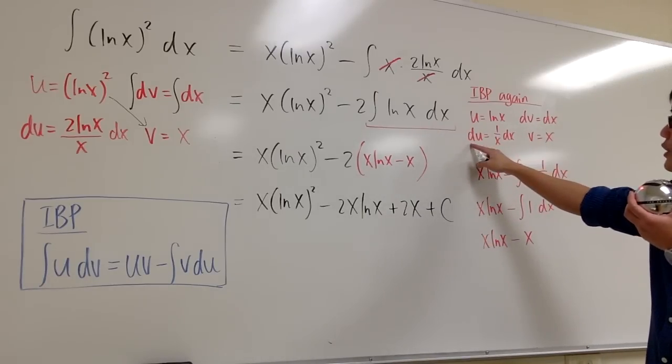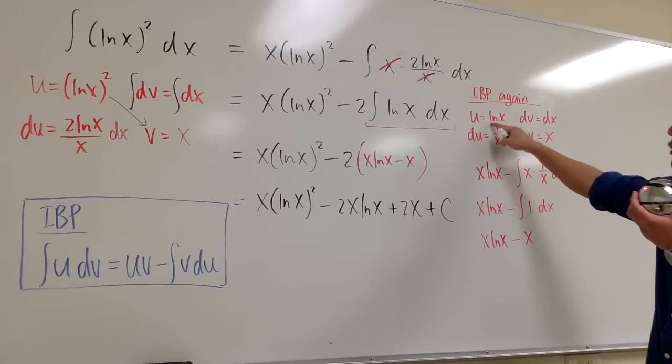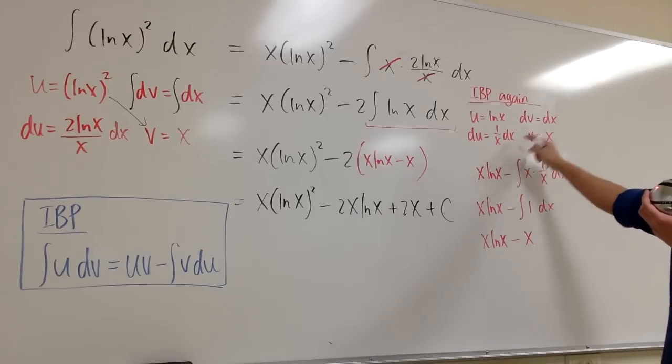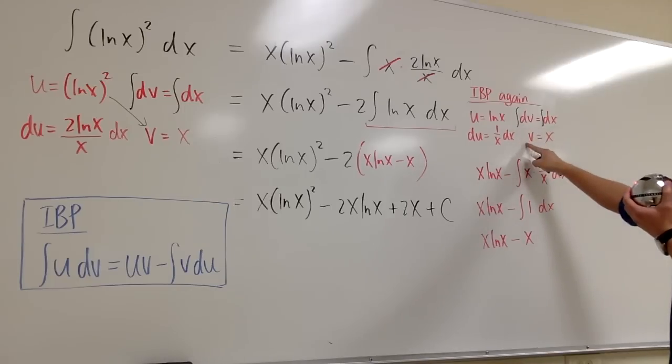And then look at this. We'll differentiate that. We'll get du equals 1 over x dx. The derivative of ln x is 1 over x. And then we'll integrate both sides. We'll get v equals x.